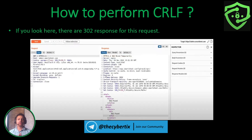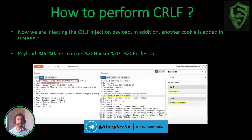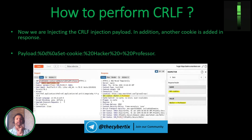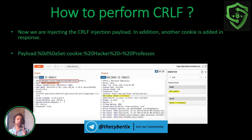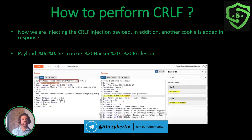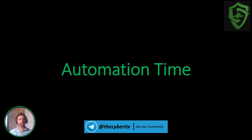To perform a CRLF injection, suppose there is a 302 redirect or temporary move. You can inject the CRLF payload into the request. For example, we inject the payload using %0D%0A (the ASCII format for CR and LF) along with an additional HTTP header — Set-Cookie — and values like 'hacker=professor' using %20 for spaces. When this GET request is sent, the response will include an extra Set-Cookie header with 'hacker=professor'. This is how CRLF injection vulnerability works.